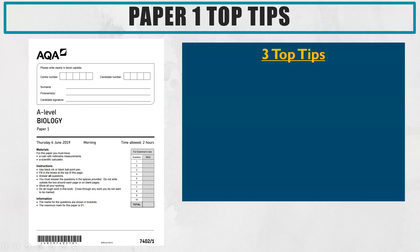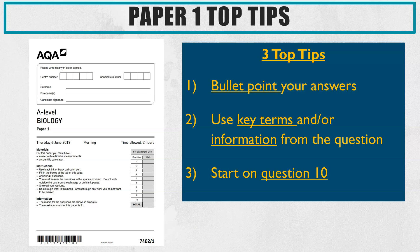So my top tips — I've got three and I'll talk you through all three of them. First of all, for every single question, bullet point your answers. Do not write in paragraphs because it's easy for you to start to waffle and it makes it harder for the marker to spot your mark points. Bullet point to speed you up, reduce waffle, and make it easier for the examiner to find your answers. Always think when you're answering any question: which key term have I put in here, because it's all about the key terms in biology. It might also be: what information from the question have I used, because so many questions say use all the information from the question to help you answer. The final strategic point I'm going to emphasise — start on question 10, and I'll come back to that one.